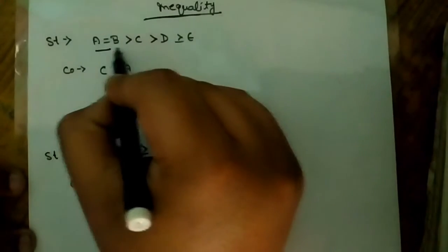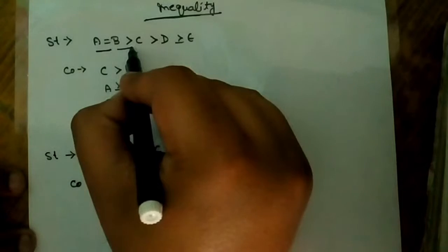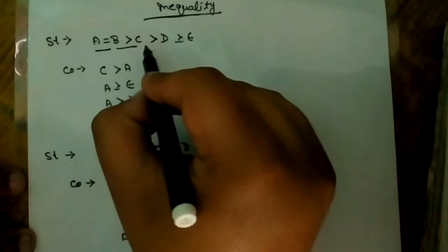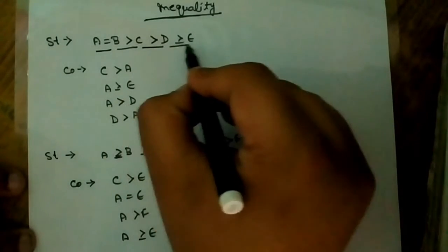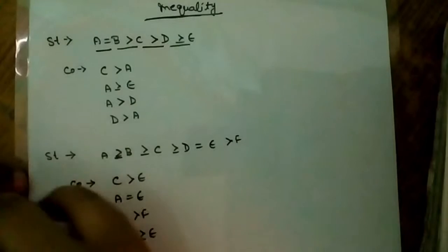In the first statement we can see that: a > b, a = b, b > c, c > d, and d >= e.